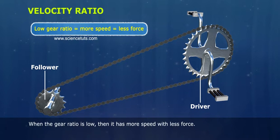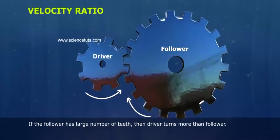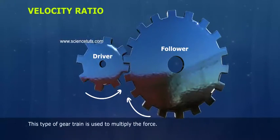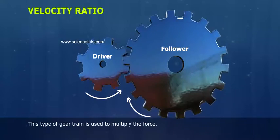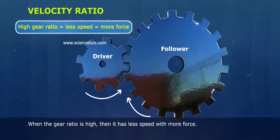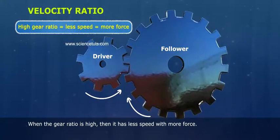When the gear ratio is low, then it has more speed with less force. If the follower has large number of teeth, then driver turns more than follower. This type of gear train is used to multiply the force. When the gear ratio is high, then it has less speed with more force.